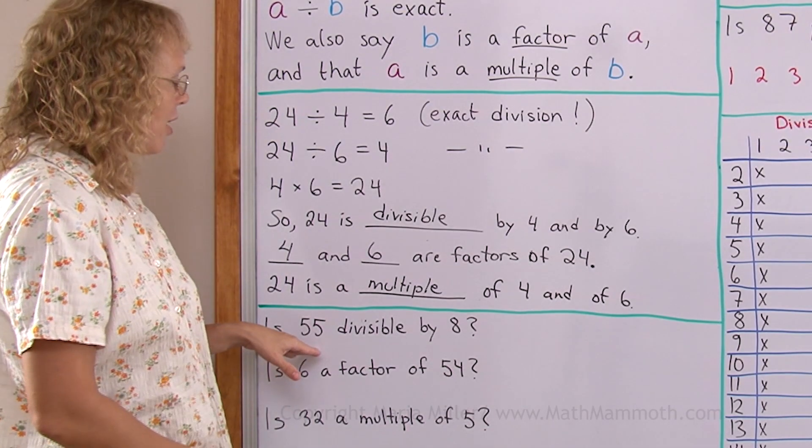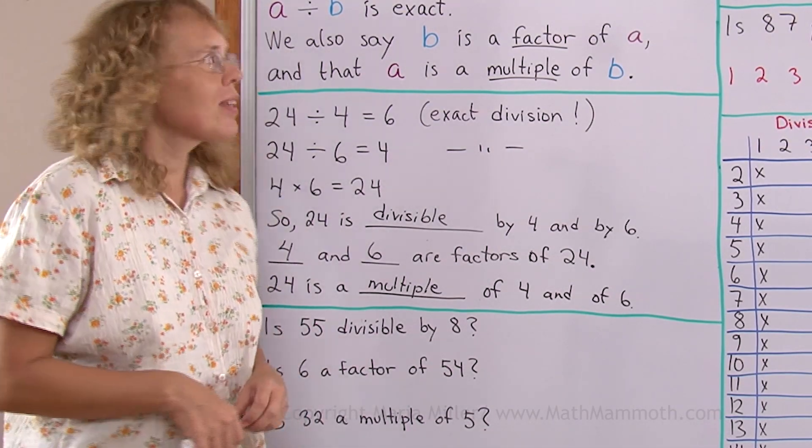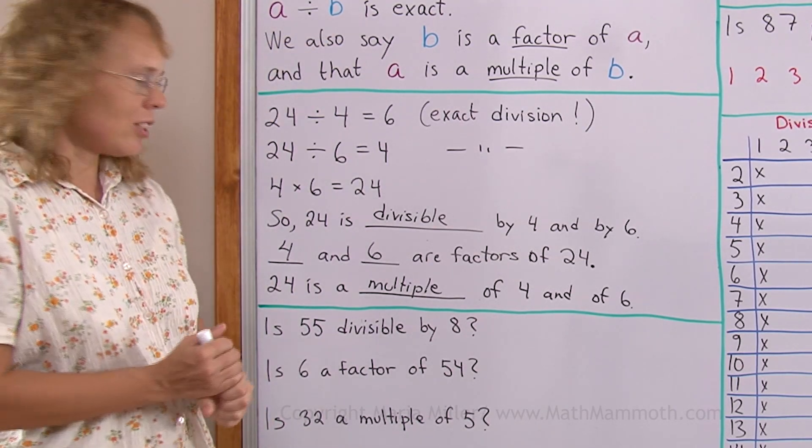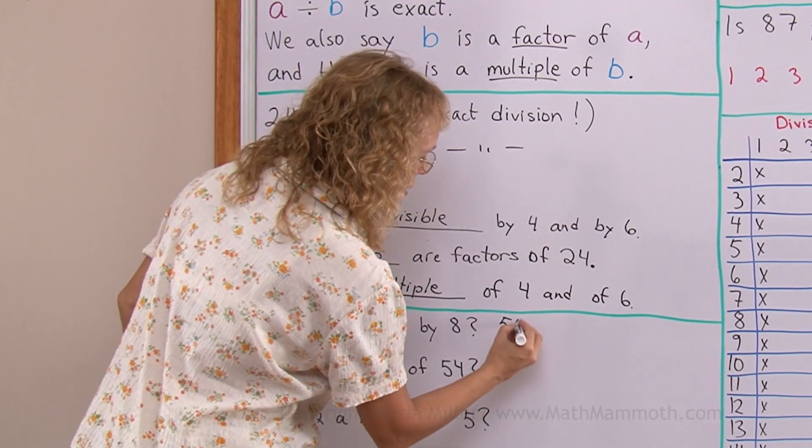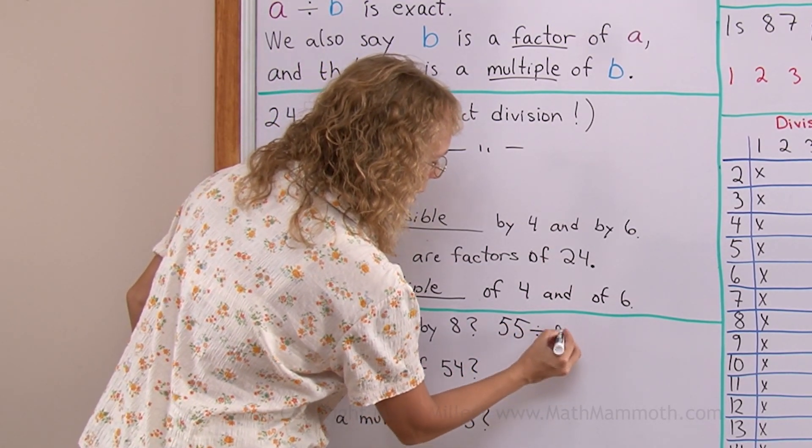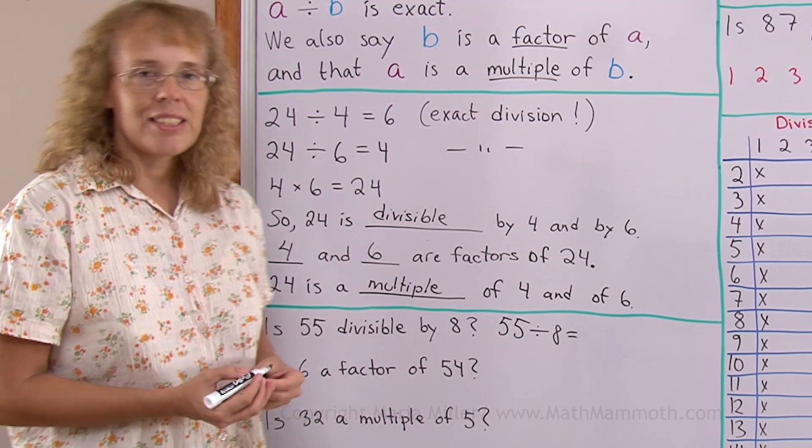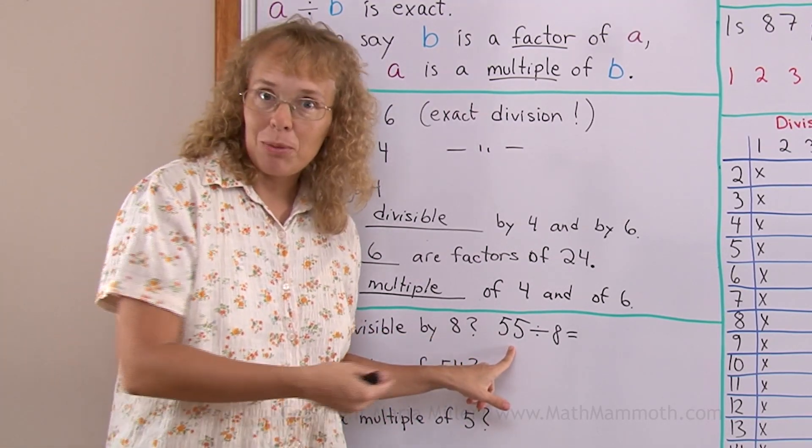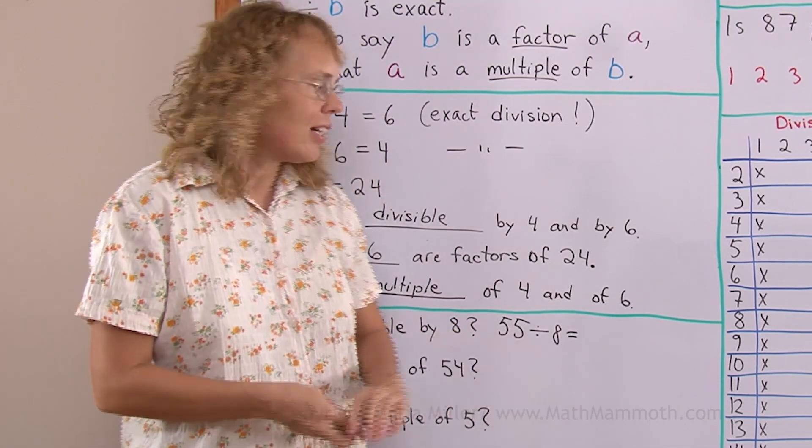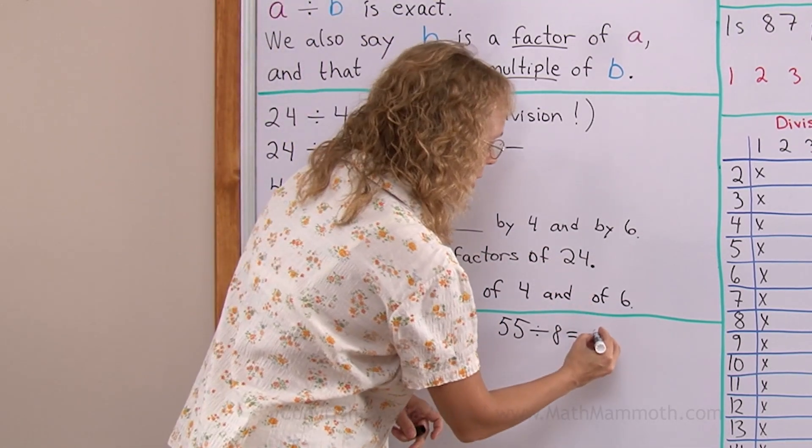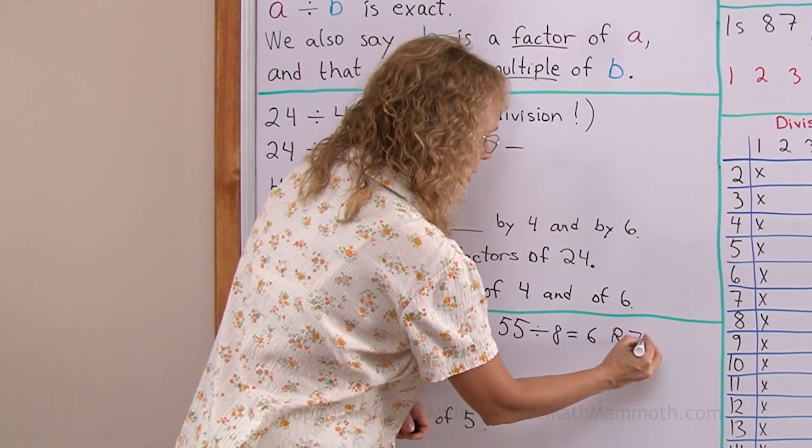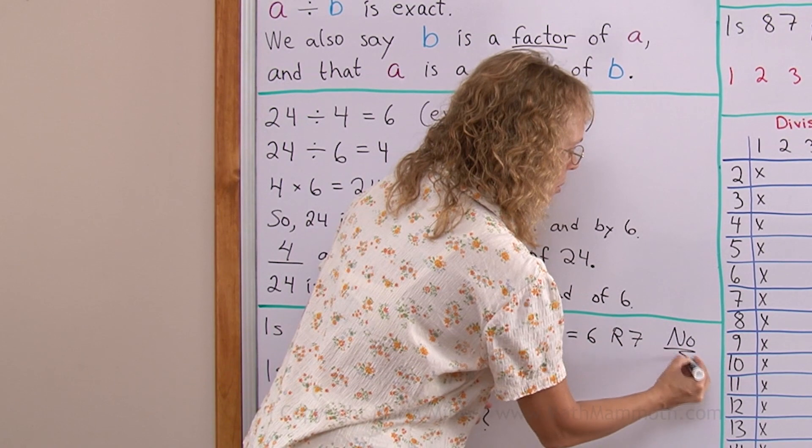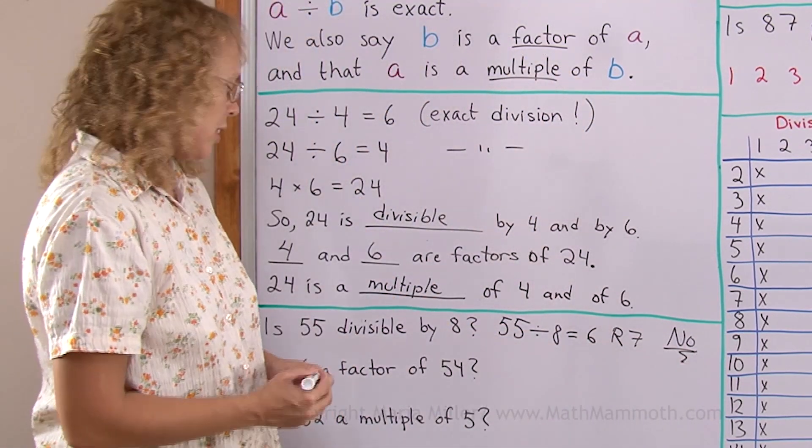Now is 55 divisible by 8? How do you check? Well you check by dividing and checking if the division is exact. So 55 divided by 8. Now it's not going to be exact. No, because 56 would be divisible by 8. 56 divided by 8 equals 7. So this is actually 6 and then we have a remainder of 7. So therefore no, it is not divisible. You got a remainder in a division and not an exact division.